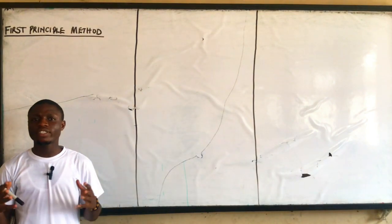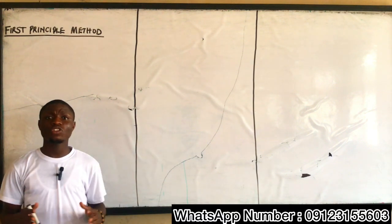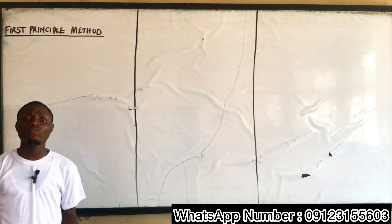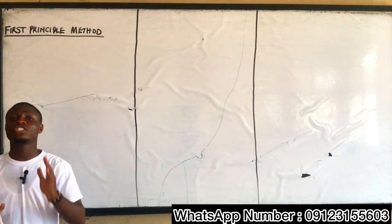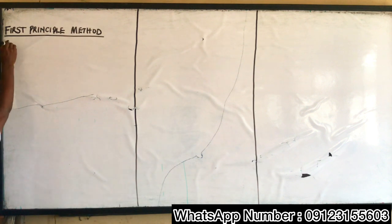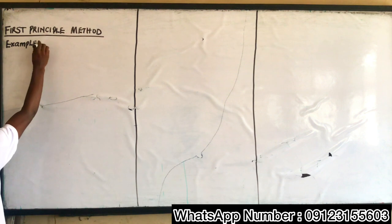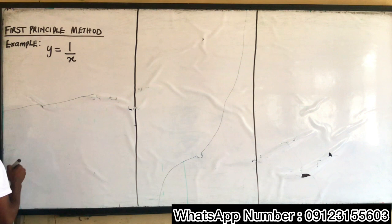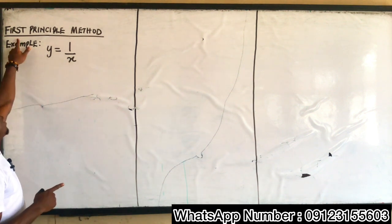Hello, welcome to Excellence Link Academy. For today, we're going to be discussing the first principle method of differentiation involving rational numbers — numbers in the form of a fraction. So for this example, if I have y is equal to 1 over x, I'm told to differentiate this via the first principle method.